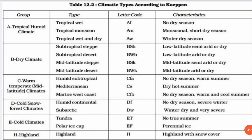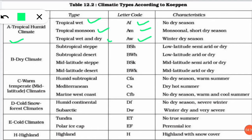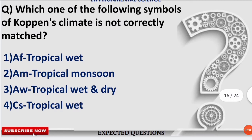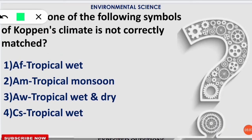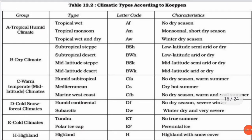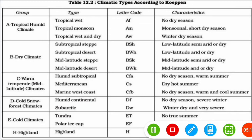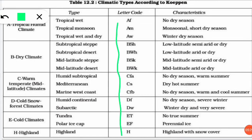Köppen has given letter codes to different climatic zones and types. For example, 'Af' is given to tropical humid climate (tropical wet); 'Am' is given to tropical monsoon; 'Aw' is given to tropical wet and dry climate. In this question, option 4 incorrectly stated that 'Cs' equals tropical wet — which is wrong. 'Cs' denotes Mediterranean climate. You should remember all of these letter codes, as they are very important for examinations.